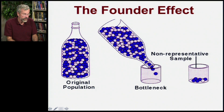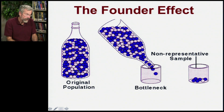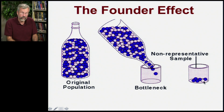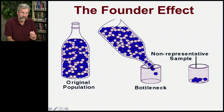By chance, we may get a non-representative sample. Whereas in the original population there might have been roughly twice as many blue as gray, by chance we only pull out three individuals — six alleles total because they're diploid. We might only get one gray allele and all the rest blue. That's a big change in gene frequency from a founder effect.